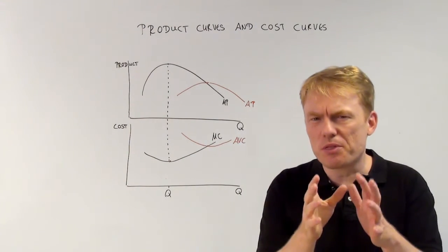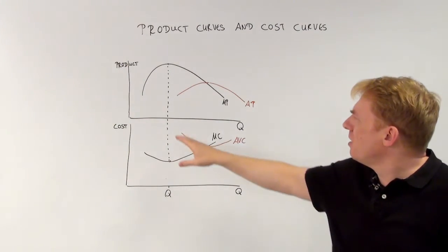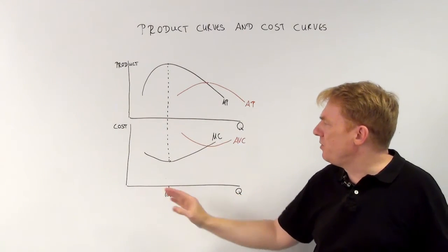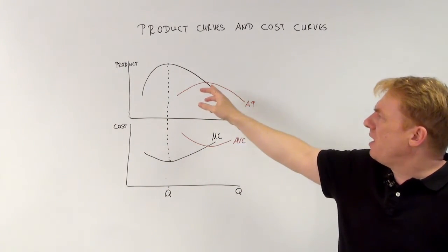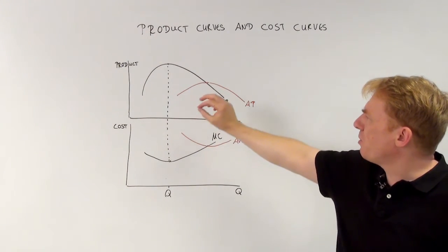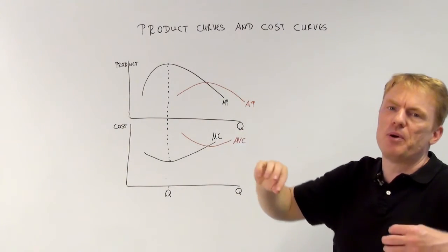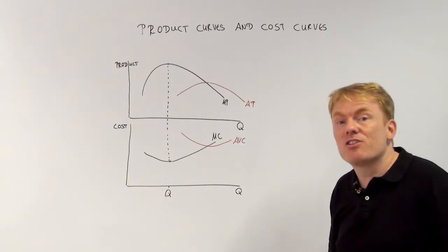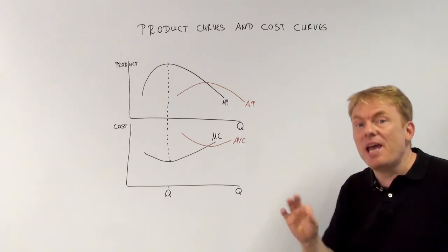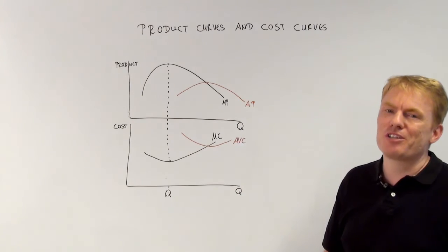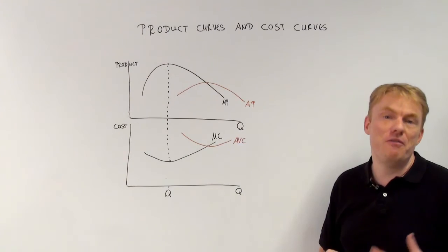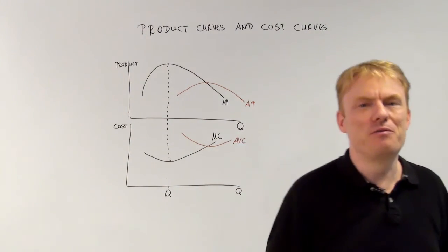So there are two very important aspects. First, marginal product rises if and only if marginal costs go down. Second, the intersection point between average product and marginal product is the maximum of average product, the minimum of average variable cost, and also the intersection point between marginal cost and average variable cost. Thank you for watching.